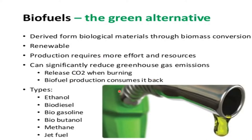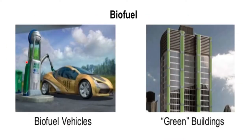There are different types of biofuel: ethanol, biodiesel, biogasoline, biobutanol, methane, and jet fuel. These biofuels have an oxygen level of 10 to 45 percent, while petroleum has none, essentially making the chemical properties of biofuel very different from those of petroleum.